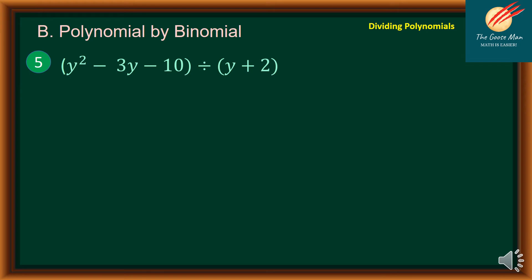Let's move on to dividing polynomial by binomial. Say for instance, I have y squared minus 3y minus 10 divided by the expression y plus 2. I'll put my dividend y squared minus 3y minus 10 inside the division house, and my divisor y plus 2 is outside. By inspection, y squared minus 3y minus 10 is already in descending order.